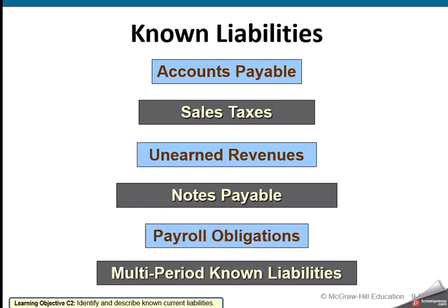The current liabilities we will talk about — these are our most common ones. Accounts Payable is by far the most common. Any business that receives invoices and has a person who enters those invoices into their accounting system — that goes into the account called Accounts Payable. Then they look at the terms to determine when they have to pay, and pay it out when it's due.